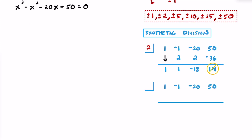Let's try 5 next. Bringing down 1: 1 times 5 is 5; negative 1 plus 5 is 4; 5 times 4 is 20; negative 20 plus 20 is 0; 5 times 0 is 0; but 50 plus 0 gives a remainder of 50. Since that's not 0, 5 is not one of the zeros and x minus 5 is not one of our linear factors.